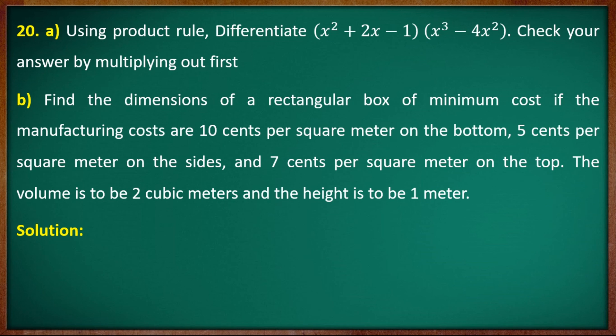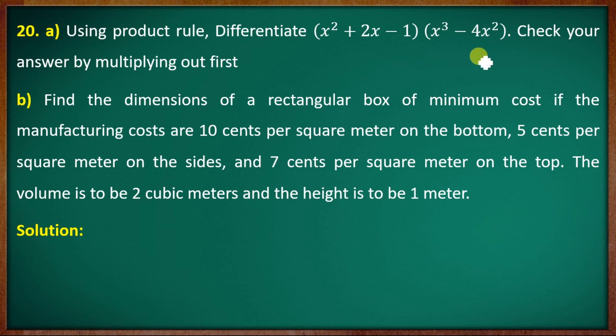Question 22: Using the product rule, differentiate (x² + 2x − 1)(x³ − 4x²). Check your answer by multiplying out first.